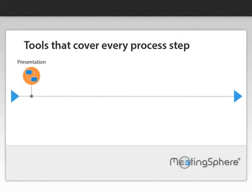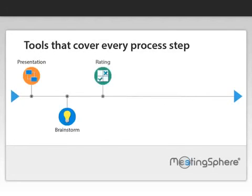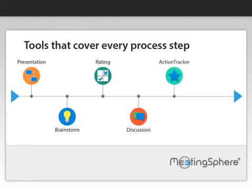A meeting may, for instance, kick off with a presentation which sets the scene for brainstorming and organizing a list of ideas, opinions or facts. These are then prioritized in a cut-off vote. The top-scoring items are taken forward to an in-depth discussion before actions are agreed and specified in the Action Tracker tool.